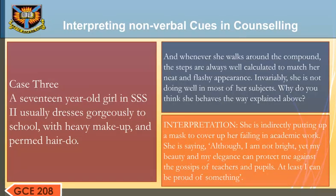Case 3: A 17-year-old girl in SS2 usually dresses gorgeously to school with heavy makeup and a pant hairdo. Whenever she walks around the compound, her steps are always well calculated to match her neat and flashy appearance. Invariably, she is not doing well in most of her subjects. Interpretation: She is indirectly putting up a mask to cover up her feelings of inadequacy in academic work. She is saying, 'Although I am not bright, yet my beauty and elegance can protect me against the gossip of teachers and pupils.'